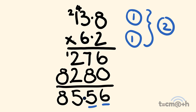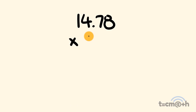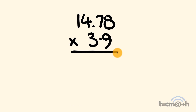Alright, plenty of examples — there's another one coming. Let's get some bigger numbers now. We have 14.78 and we're going to multiply by 3.9. We'll multiply this like it's 1,478 multiplied by 39 and then deal with the decimals afterwards.